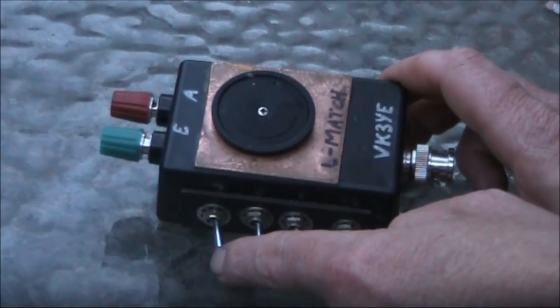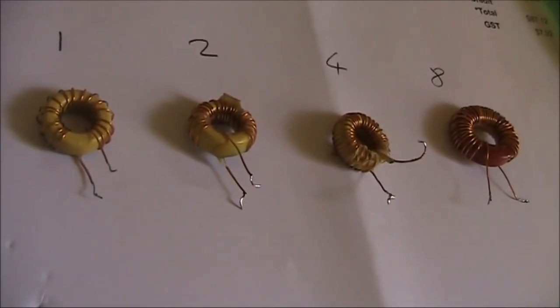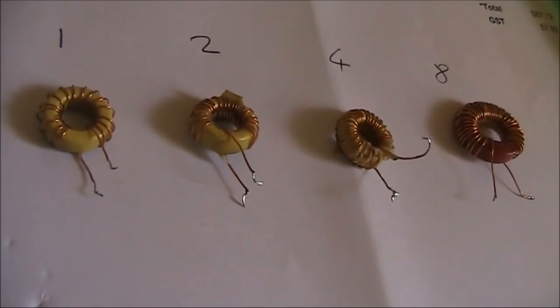That creates an extra position here for the 8 microhenries. The 8 microhenries has more turns, and is wound on a bigger toroid.